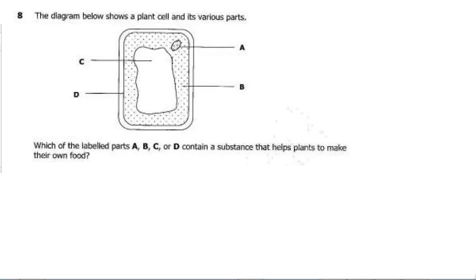This is question number 8 from the 2014 Grade 9 Science Final Paper 1. The question says the diagram below shows part of a cell — it shows a plant cell and its various parts. Which of the labelled parts A, B, C, or D contains a substance that helps plants to make their own food? So let's try to name the parts of the plant cells.